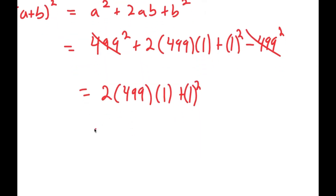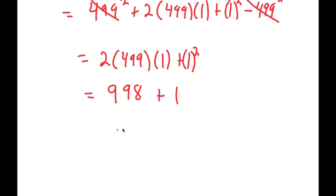So I'm left with 2 times 499 times 1 plus 1 squared. 2 times 499 is 998, times 1 is just 998, and plus 1 squared is plus 1. This is equal to 999.